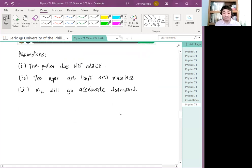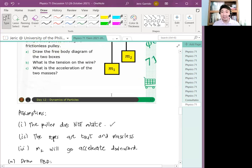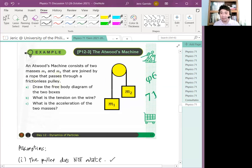That's important. And then number three, M2 will go down, will accelerate downward. Those are the assumptions for this problem. Now, first, we will draw a free-body diagram. Draw a free-body diagram. So here, since we assume that the pulley does not rotate, the tensions exerted on this rope and at this rope, they are the same.